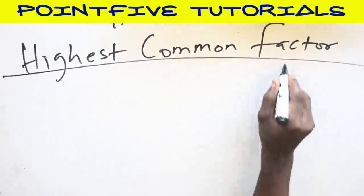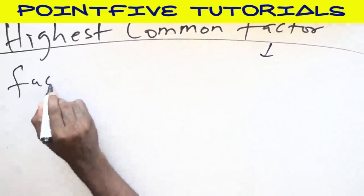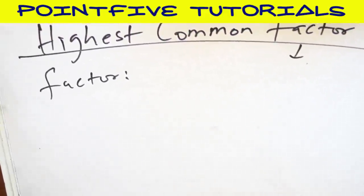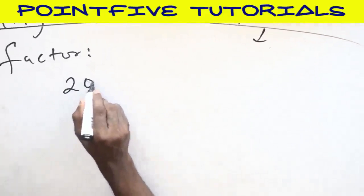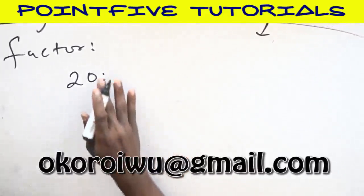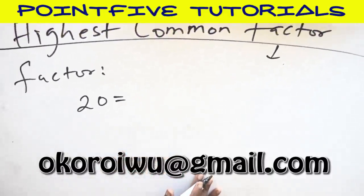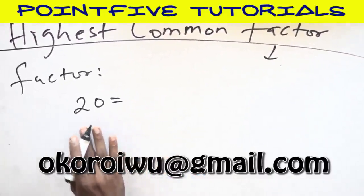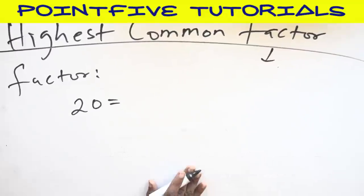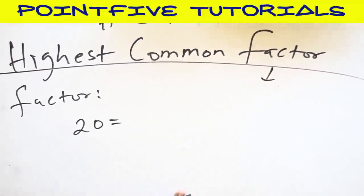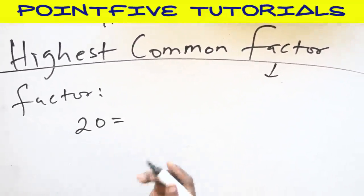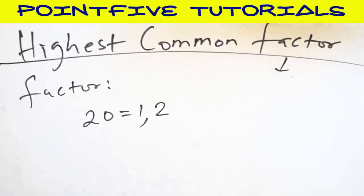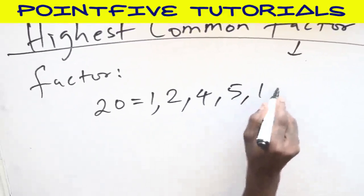Before you know HCF, please can you tell us the meaning of factor? In mathematics, if I say find the factors of 20, I'm actually asking you to find numbers that can divide 20 without remainder. So the factors of 20, I start from 1. We can divide these without remainder. Then we have 2, we have 4, we have 5, we have 10, and we have 20.